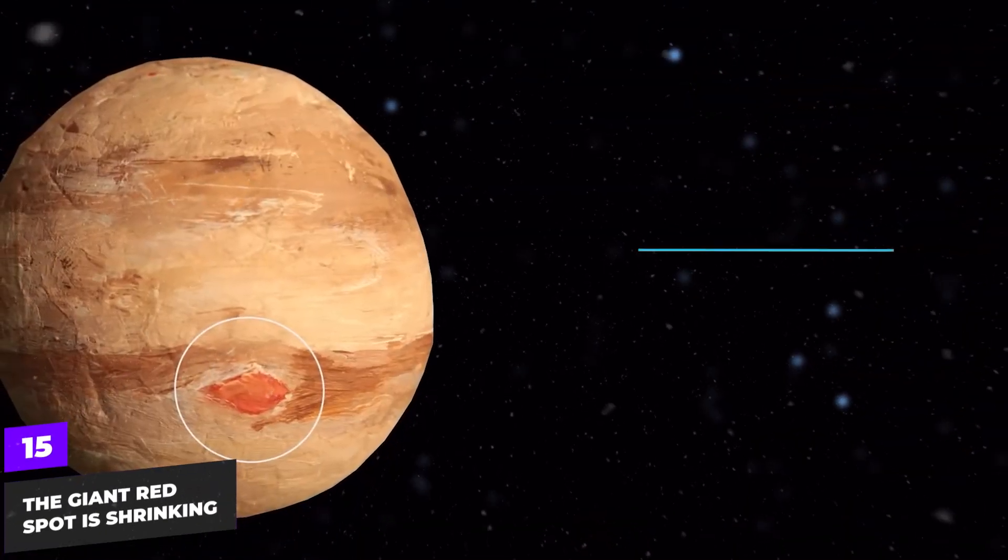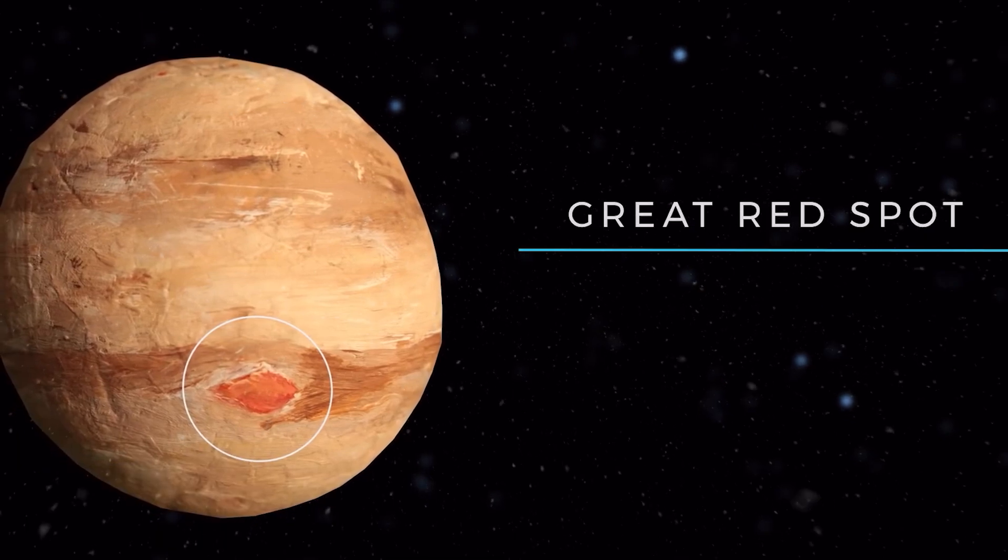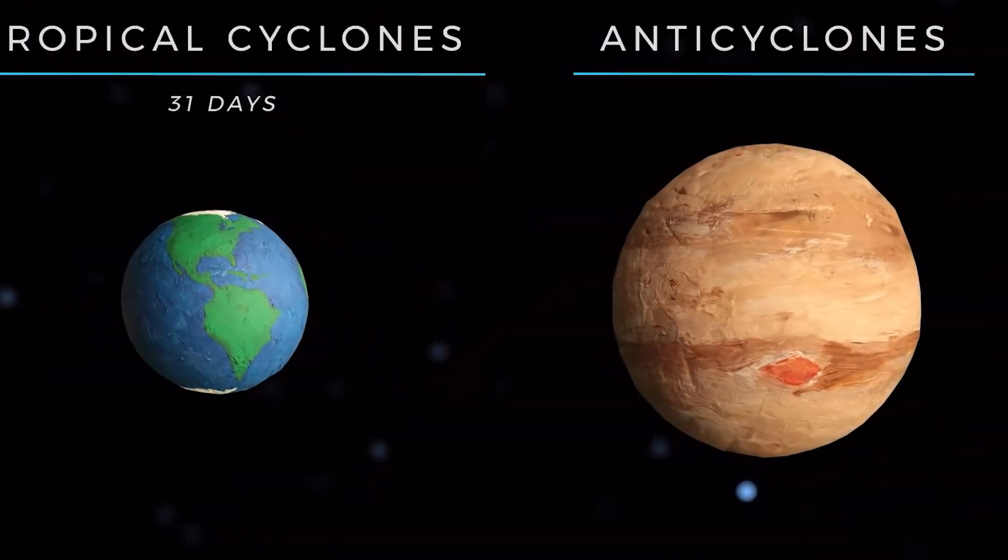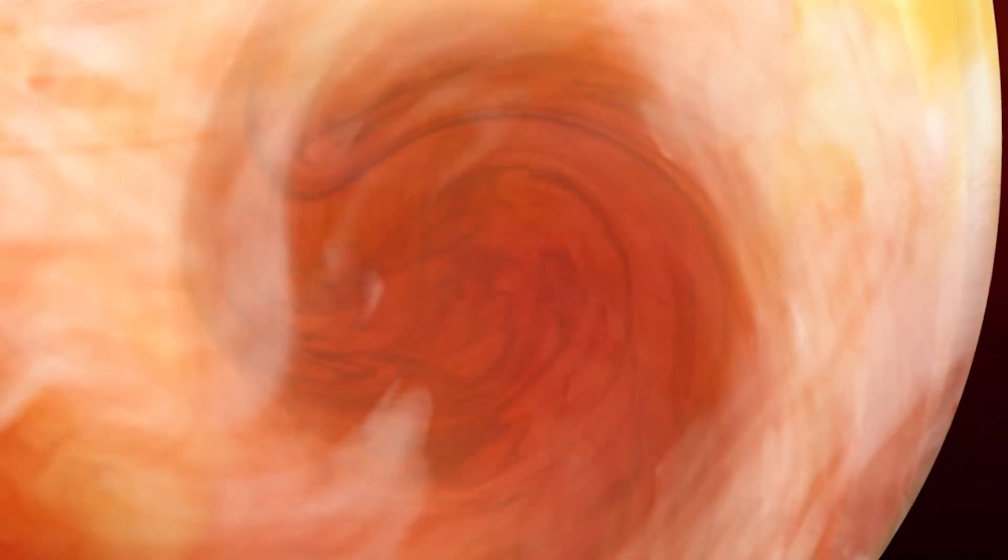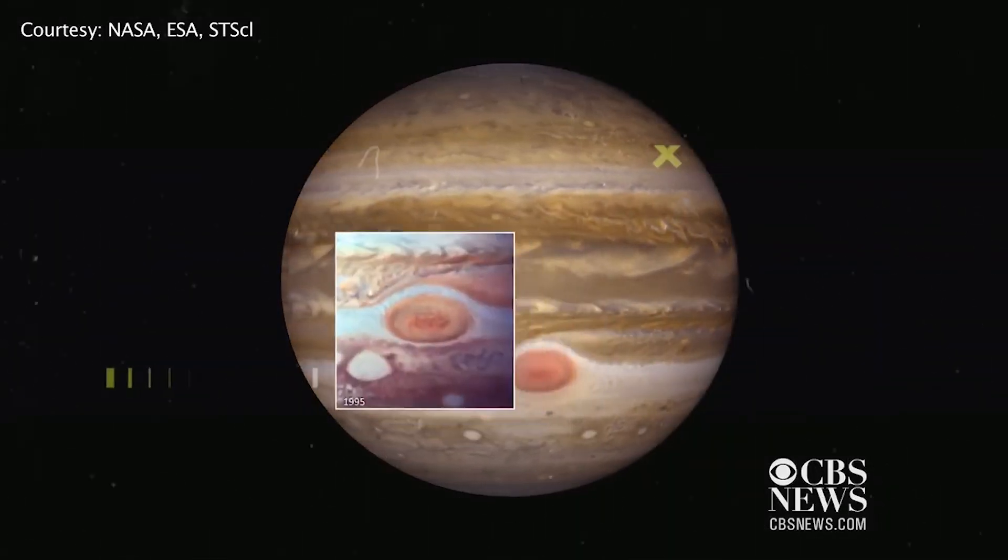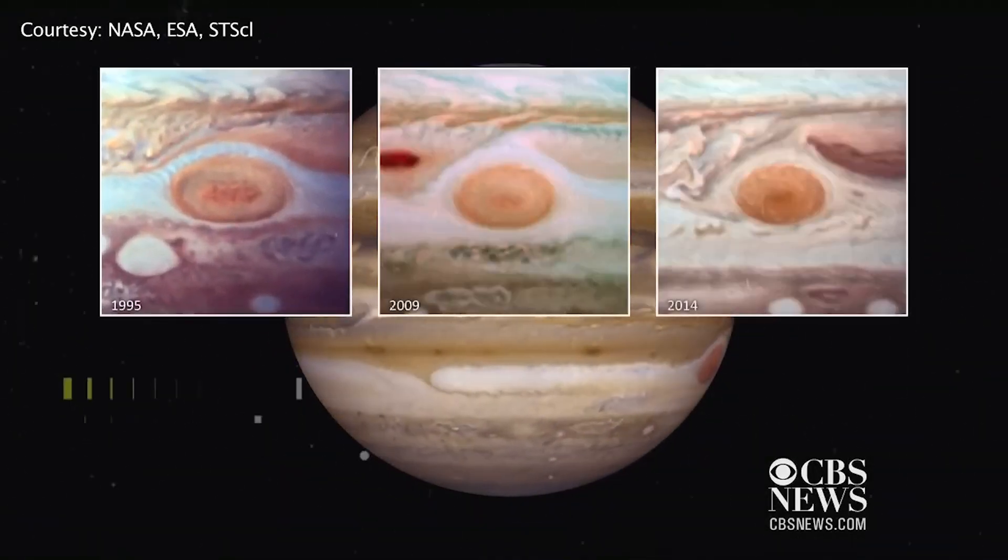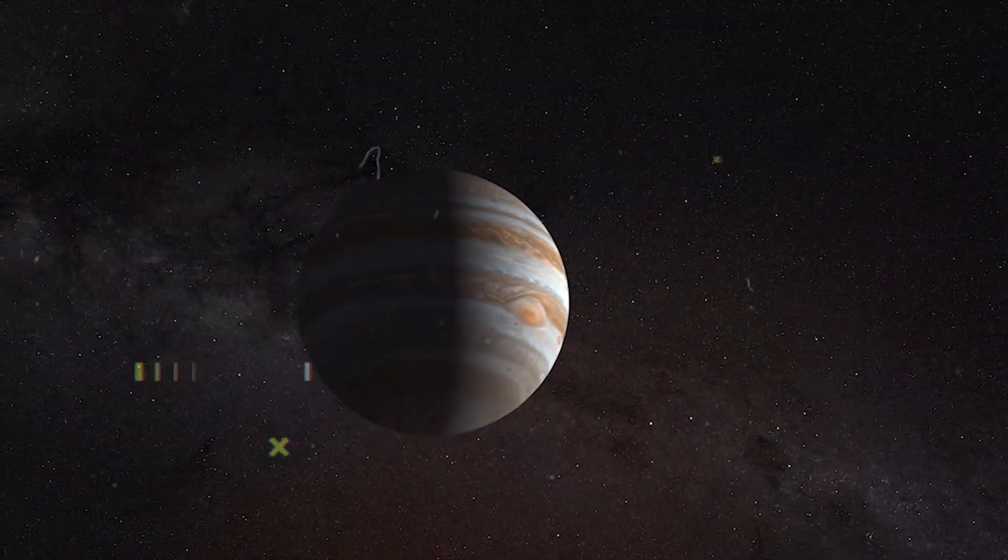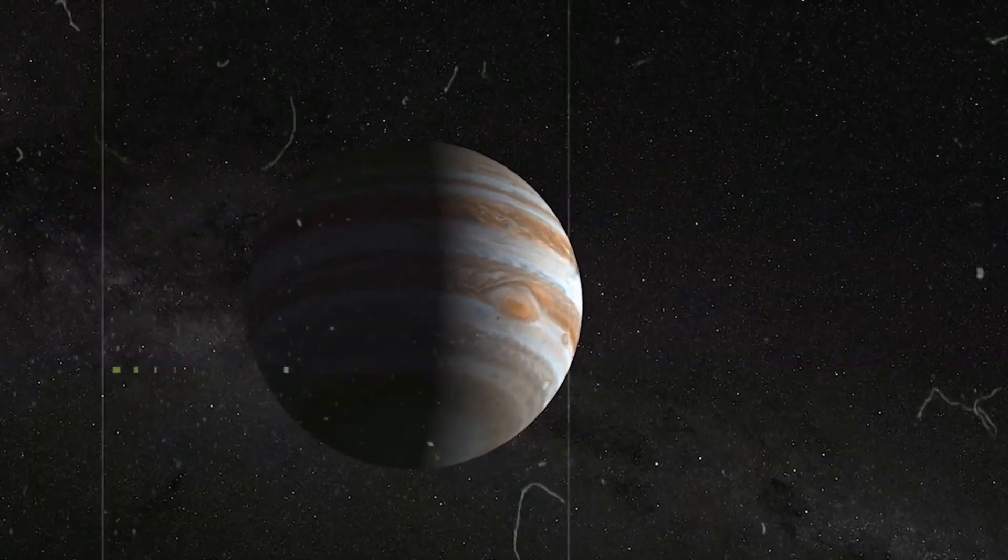The giant red spot is shrinking. Jupiter's Great Red Spot, a gigantic storm larger than Earth, has been observed for over 300 years. However, recent observations indicate that this storm is shrinking, puzzling scientists about the potential causes and future implications for the giant planet.